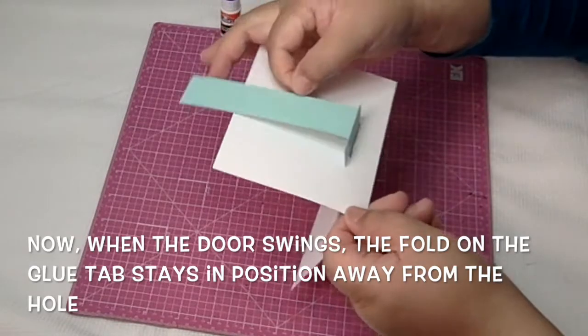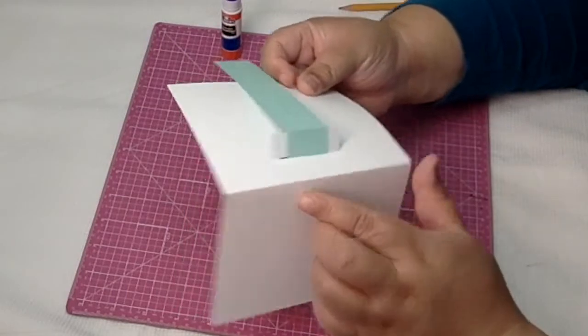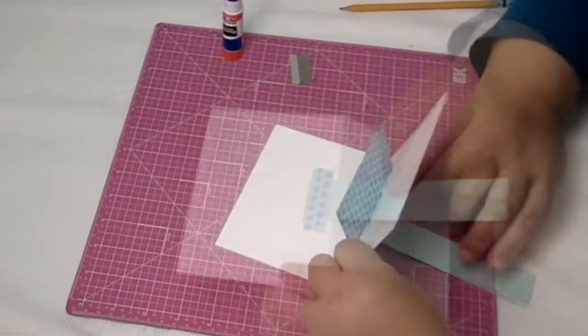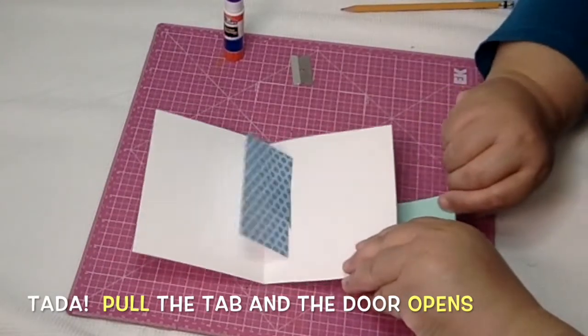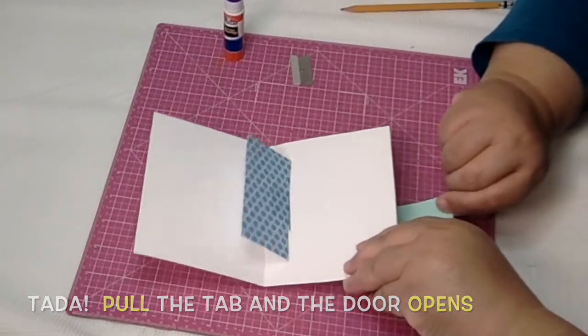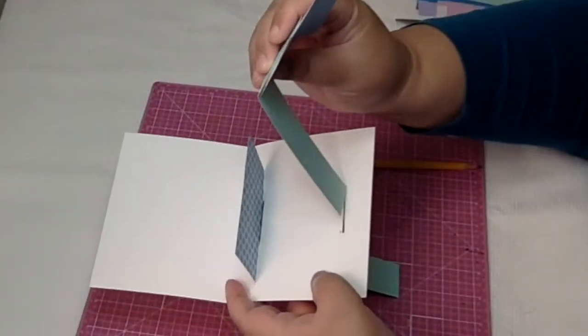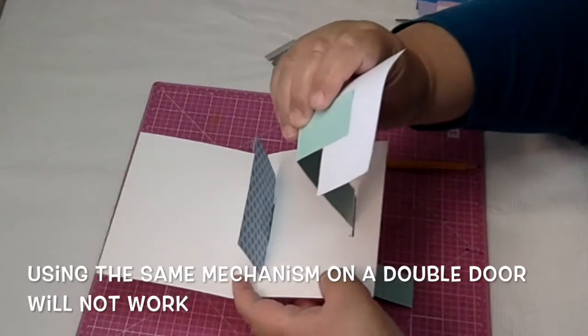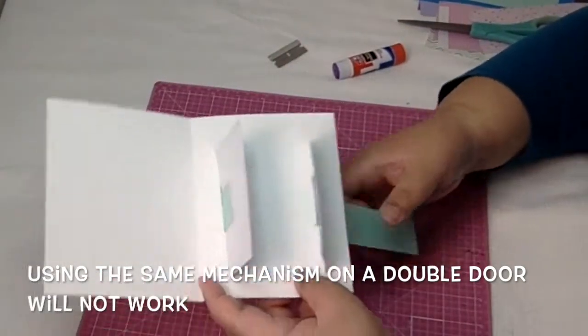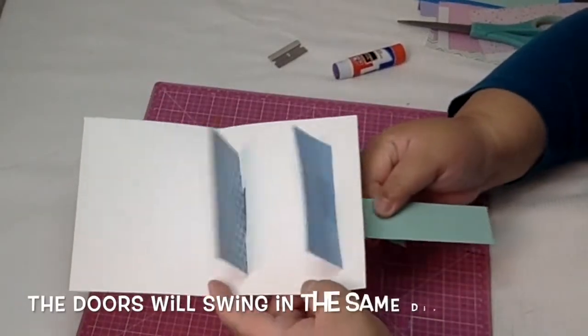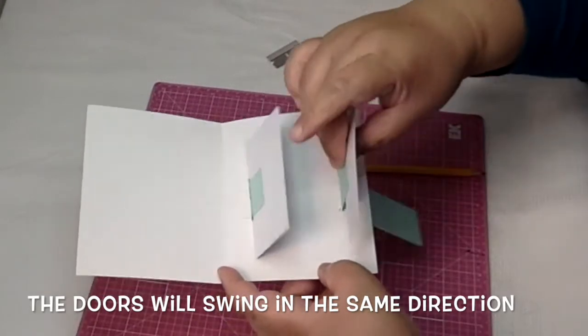And that way the door can swing back and forth, and the pivot point of that fold on the pull tab can stay far away from the hole, and that's what allows for that pivoting motion. So when you pull the tab, the door opens. Notice when you try to use the same mechanism for the double doors, it won't work because when you pull on it both of the doors will swing in the same direction.